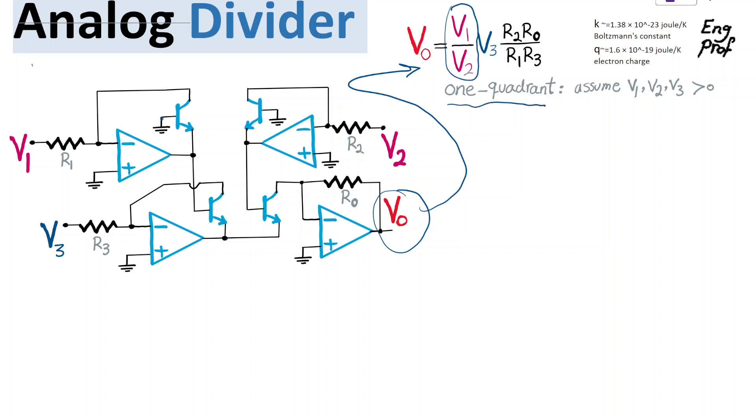One-quadrant analog divider in which we assume that V1, V2, V3 are all positive polarity. So with that in mind, let's see how this works.